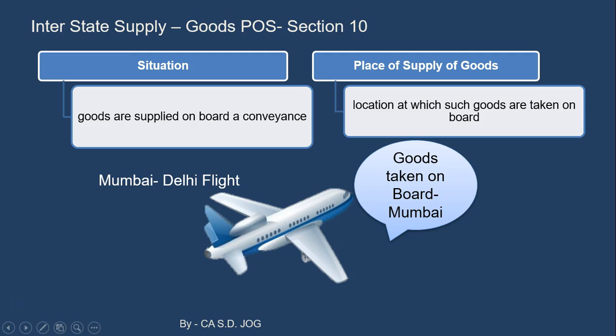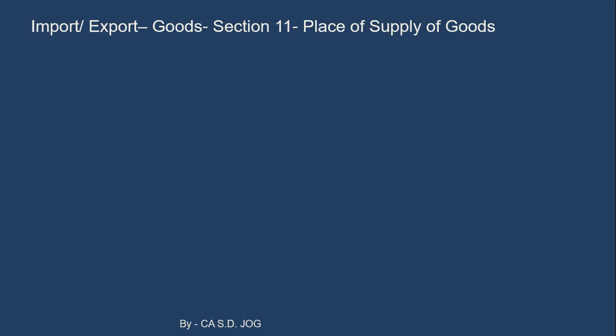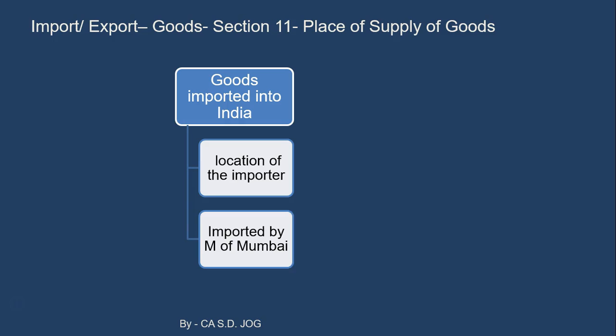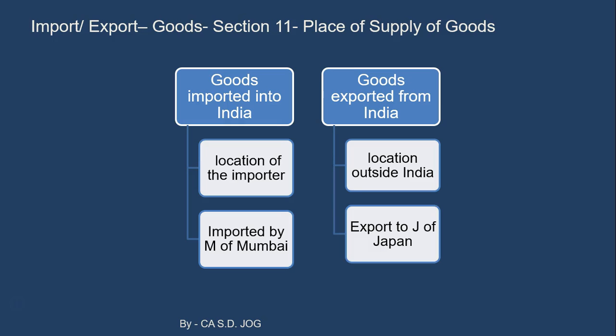So these are the various situations for place of supply of goods under Section 10. Now under Section 11, place of supply where import or export is involved: for goods imported into India, the place of supply is the location of the importer. If Mr. M of Mumbai imports goods from the US, the place of supply is Mumbai. For goods exported from India, the place of supply is the location outside India — for example, if goods are exported to Japan, the place of supply is Japan. Destination-based in both cases.